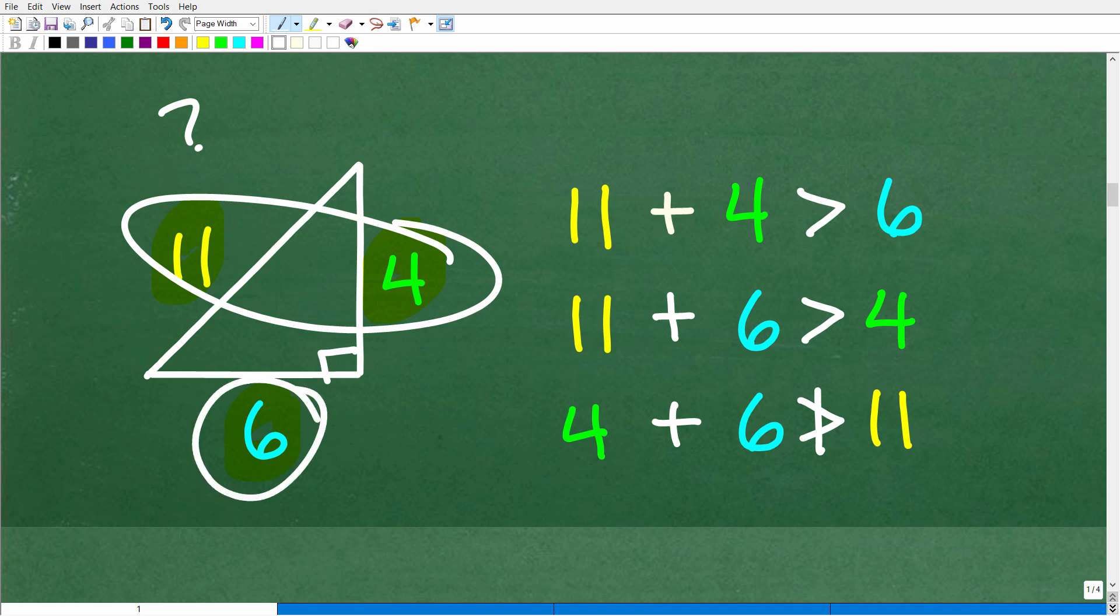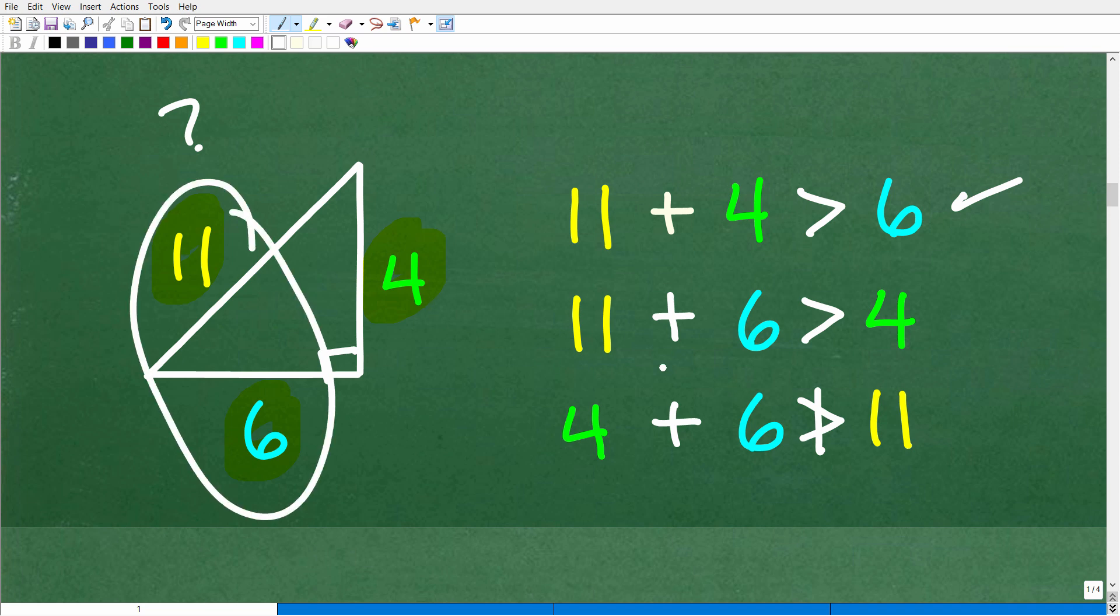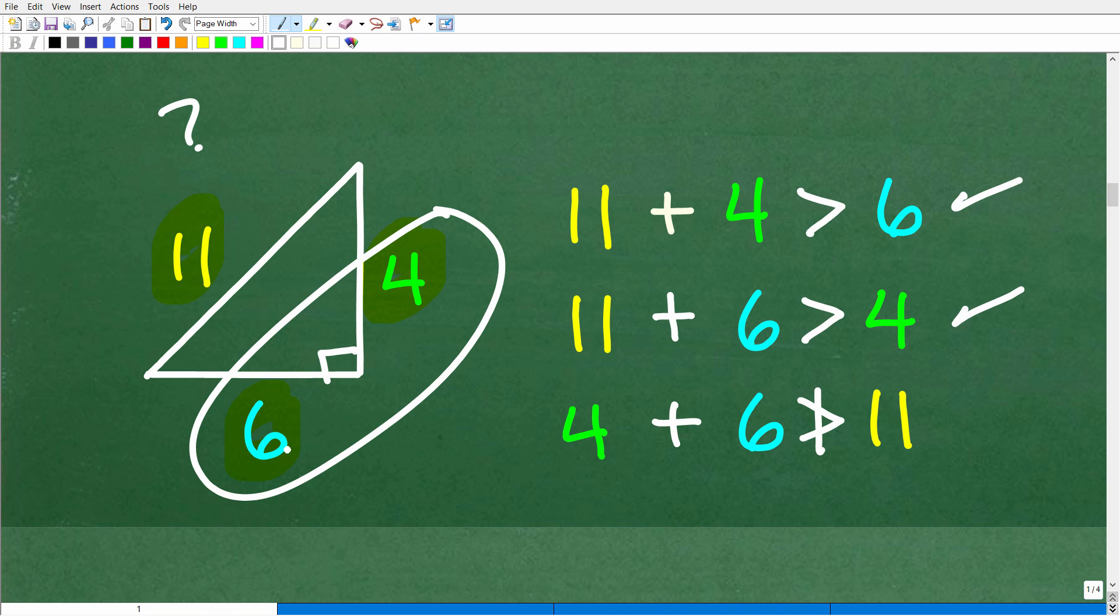Yes, right, 11 plus 4 is greater than 6. Pretty easy. All right, how about 11 and 6? All right, is that greater than 4? Well, 11 plus 6 is easily greater than 4. Not a problem there, but look right here. We have a problem. 6 and 4, so our 4 and 6, is that greater than 11? No, it's not. 10 is not greater than 11. So you cannot have a triangle with these lengths.